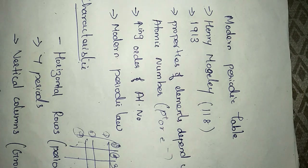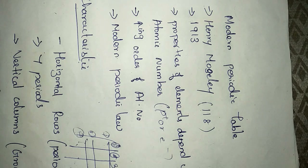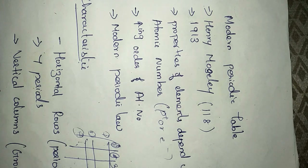But Dobereiner couldn't do the same for the upcoming elements. The next one is Newlands' law of octaves — octaves means eight; his group contained eight elements where the first and eighth elements share the same property. After the discovery of noble gases, he couldn't follow this rule, so it also came to failure.